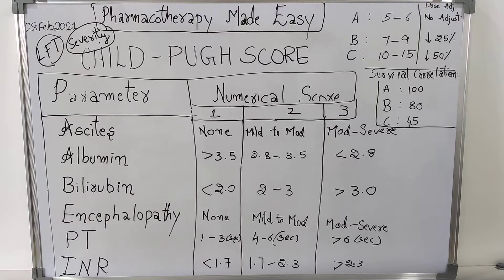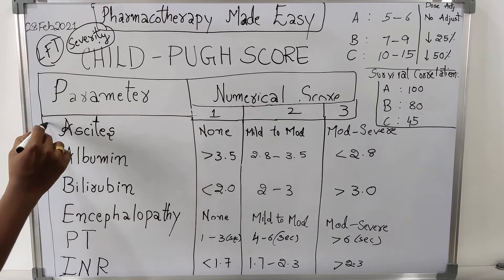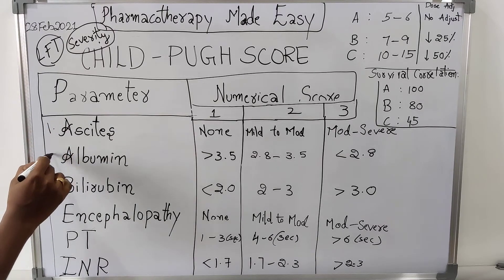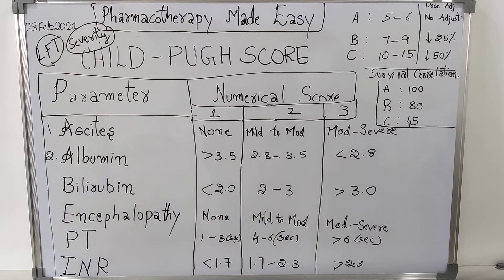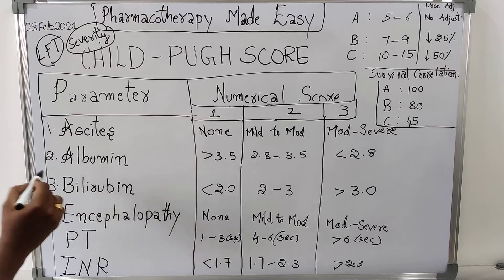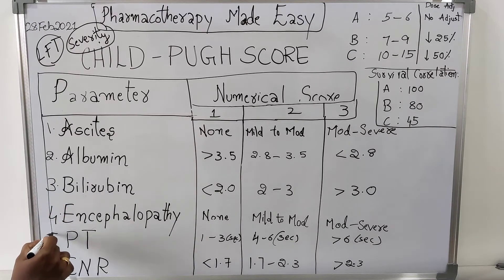What are the parameters that we use in calculating the Child Pugh Score? The parameters are presence or absence of ascites, amount of albumin present in serum, bilirubin, encephalopathy, prothrombin time, and INR.